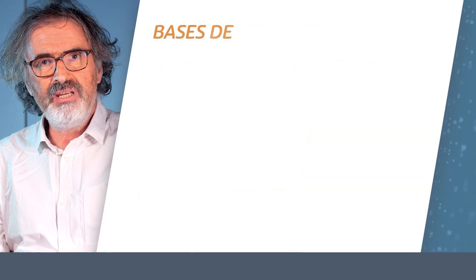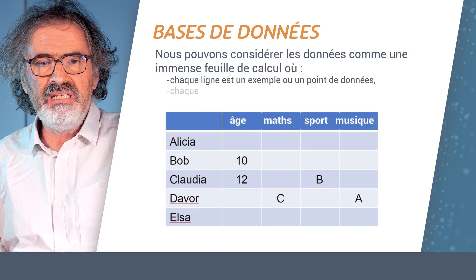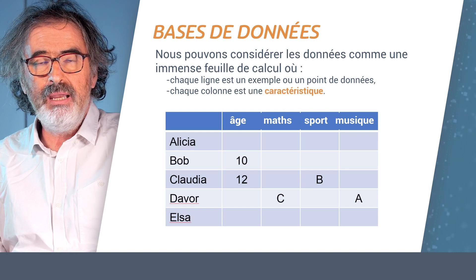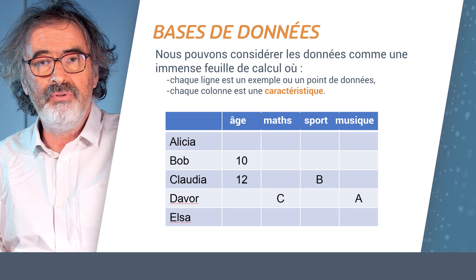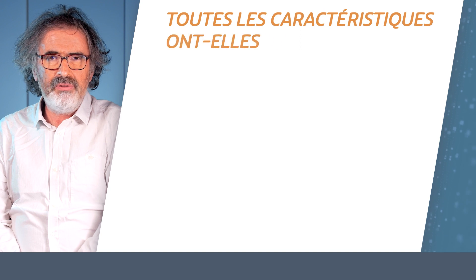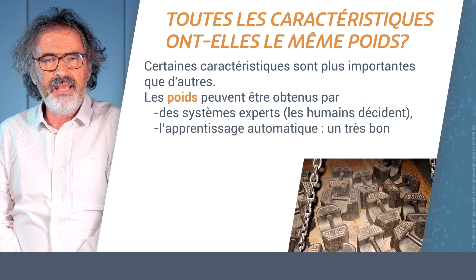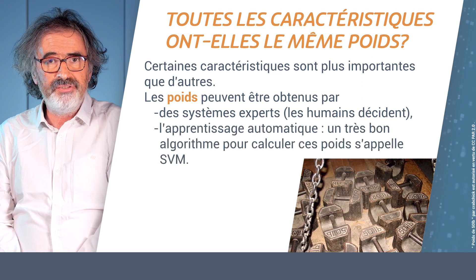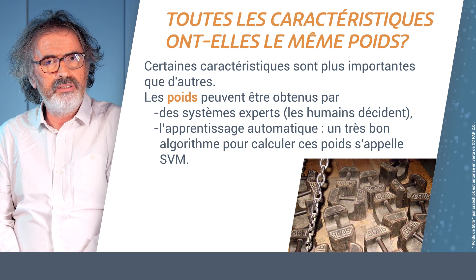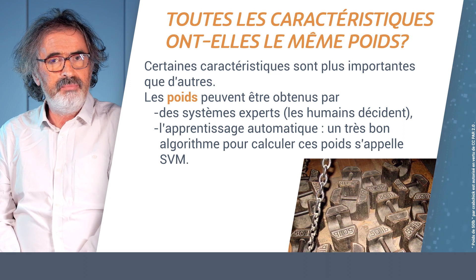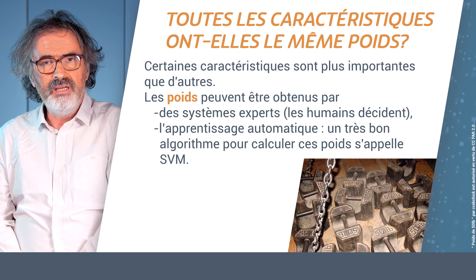Thanks to the features, we can now take our data and enter it into databases. A database can be seen as a table or a spreadsheet, where the lines correspond to the examples and the columns correspond to the features. Not all features weigh the same — some features may be much more important to solve a question than others. In the past, humans adjusted the values of these features, but today it is the machine learning algorithm which computes the different weights associated to the features.